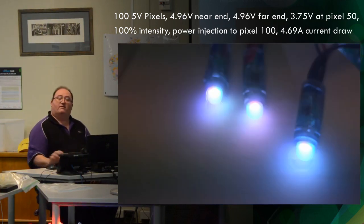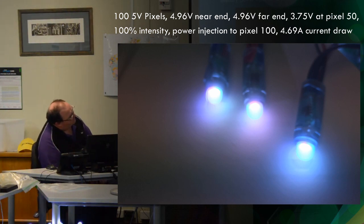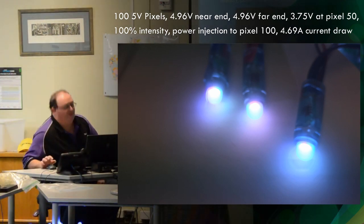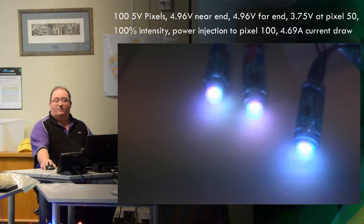So what did I do? I added a power injection just to the hundredth pixel, and it works fine. That one in the middle to the eye, although it looks a bit crappy on the screen there, to the eye was as bright and the same color as the other ones. So you can get away with injecting every 100 pixels in 5 volt. I wouldn't recommend it, but it does work.